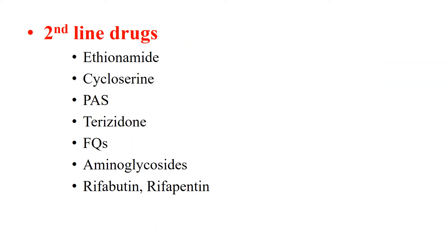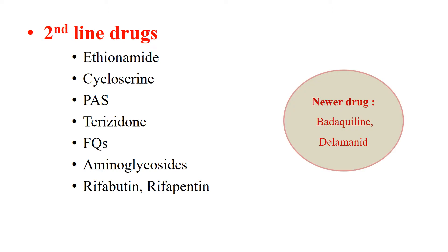The second-line drugs include ethionamide, cycloserine, para-aminosalicylic acid, terizidone, fluoroquinolones, aminoglycosides, rifabutin, and rifapentine. These drugs are used when first-line agents cannot be used or to supplement the first-line drugs. We also have two newer agents: bedaquiline and delamanid.